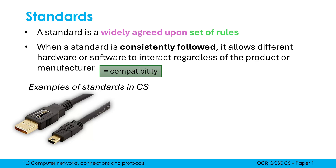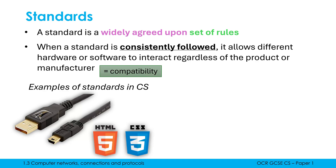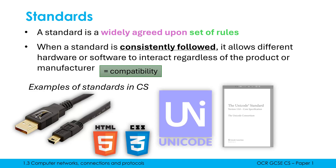USB is an example of a standard because you can go to any country in the world and their USB ports will work the same way as ours. Likewise, websites work the same in every country because there is a standard set of languages which programmers use, which all web browsers follow and display consistently. Unicode and ASCII are both examples of standards.